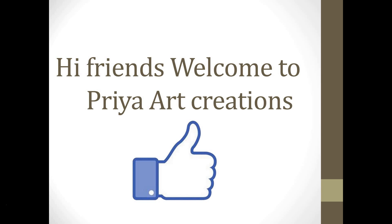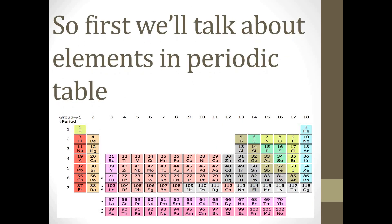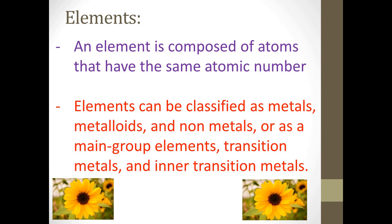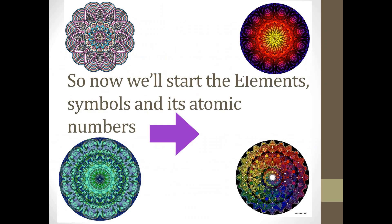Hi friends, welcome to Pre-Art Creations. Today I would like to show you the periodic table from 1 to 50. An element is composed of atoms that have the same atomic number. Elements can be classified as metals, metalloids, and non-metals, or as main group elements, transition metals, and inner transition metals. We have 118 elements in the periodic table, out of which 94 are naturally occurring. Elements are arranged from left to right and top to bottom in order of increasing atomic number.